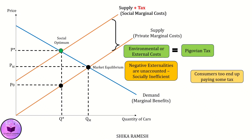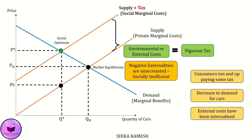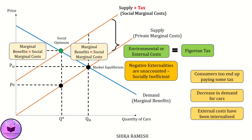However, there's a twist: even though the tax was aimed at the companies, consumers end up covering some of the tax by paying more for cars, which may cause a decrease in demand. Here we can say the external costs from the automobile market have been internalized. We know that the social optimum point is Q*, inclusive of externalities, while the market equilibrium is Qm without considering externalities. To the left of Q*, marginal benefits are greater than social marginal cost.